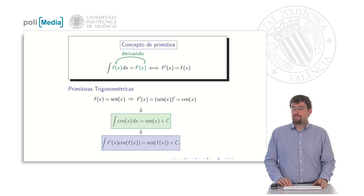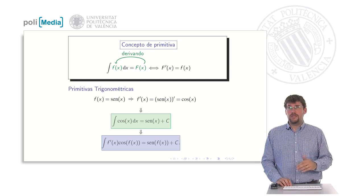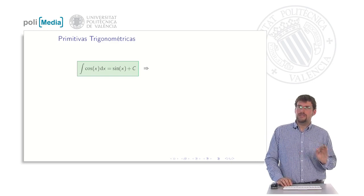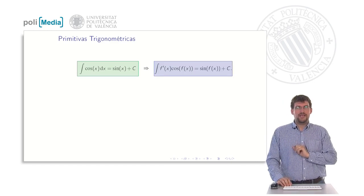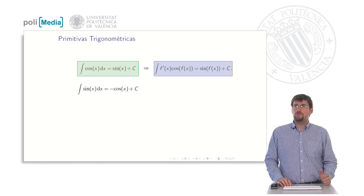In the same way that we obtain the primitive of the cosine, we can obtain the one of the sin. Let's see how. Here we have just obtained the one of the cosine, which happens to be the sin as we have mentioned before. This would be the immediate, and from the immediate we get the pseudo-immediate.